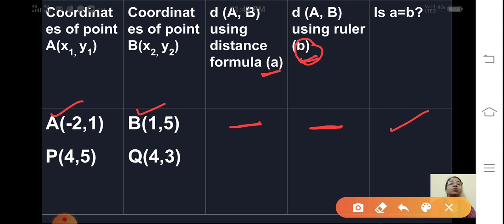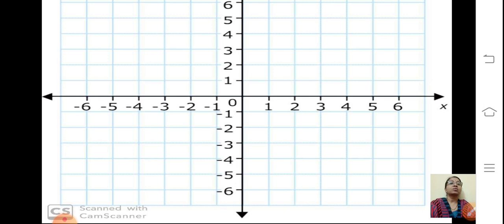Now let us go back to the procedure. In procedure here, take cartesian plane or graph paper. Let us plot the points. First point was point A whose coordinates are minus 2, 1.